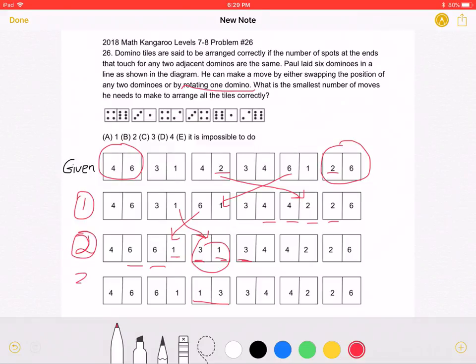And then this is our third move. Now if we look, we can see that we have 6, 6, 1, 1, 3, 3, 4, 4, 2, 2, which is correct. That means that we had to make a total of 3 moves.